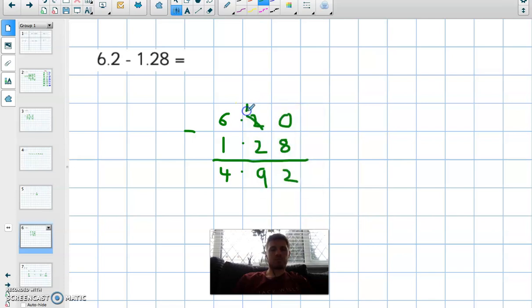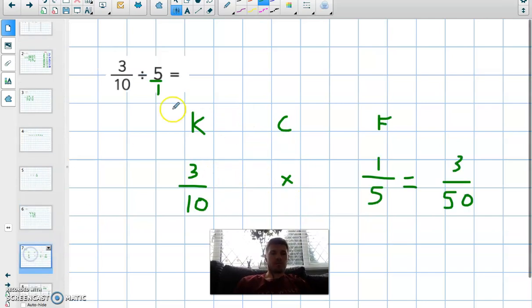So that 2 becomes a 1 and the 0 becomes a 10. Then 10 take away 8 is 2. 1 take away 2, but you can't do it because the top number is smaller than the bottom number, so we need to exchange again. 6 becomes 5 and that 1 becomes 11. 11 take away 2 is 9. Drop the dot down and 5 subtract 1 is 4. So 4.92 is your answer.